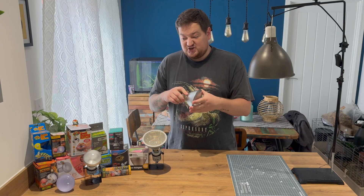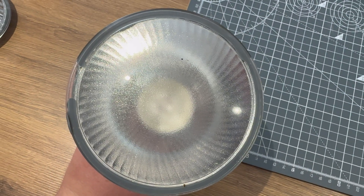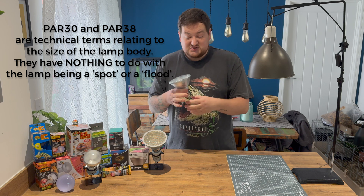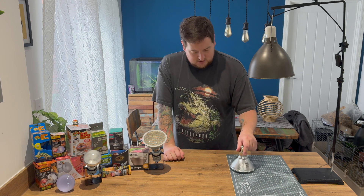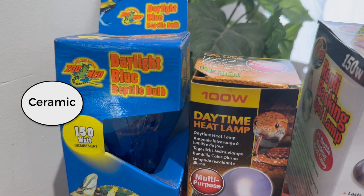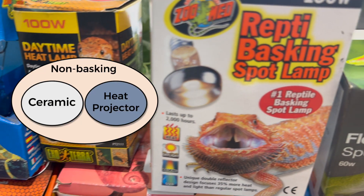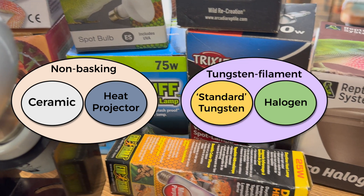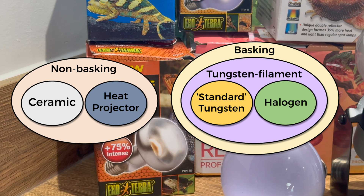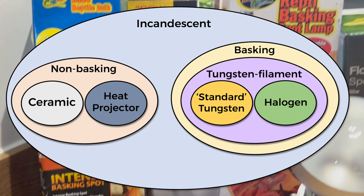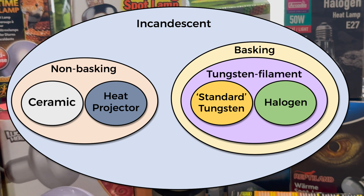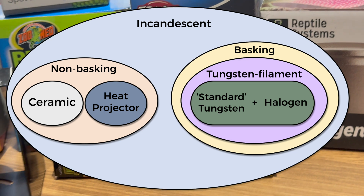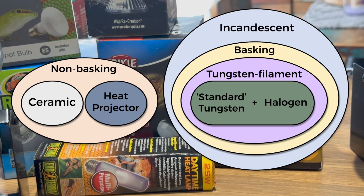Put that capsule inside a highly reflective envelope and you get a halogen lamp. The main differences we see in day-to-day life are the general size of the lamp. We tend to see that halogen capsules get put inside a PAR-30 or PAR-38 body as part of the manufacturing process — those are the sort of lamps we tend to see in animal keeping. So: ceramic heaters and heat projectors are not suitable for basking radiation; halogen lamps and normal heat lamps are both a type of tungsten filament lamp that give off good quality basking radiation. And all of these are incandescent.